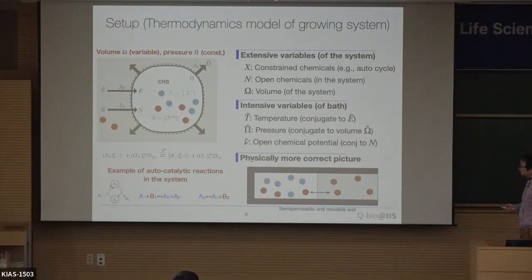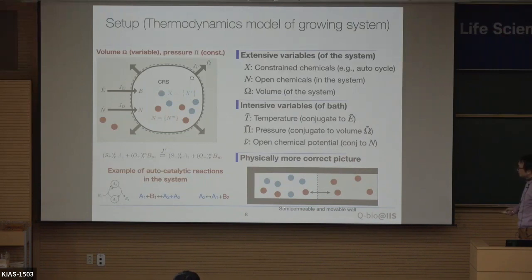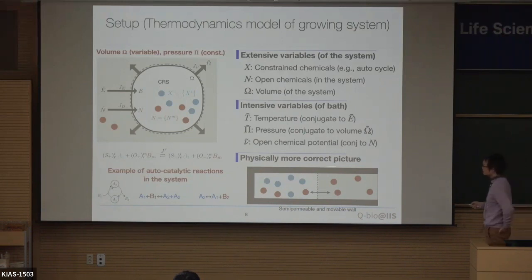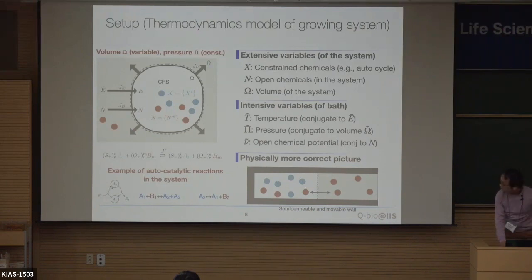A more physically correct picture of our model is as follows: we have a rigid wall, and a semi-permeable, movable barrier. The red open chemicals can diffuse across this barrier, but the blue constrained chemicals cannot. This is the physically feasible picture we are working with.